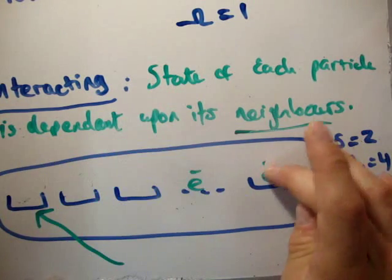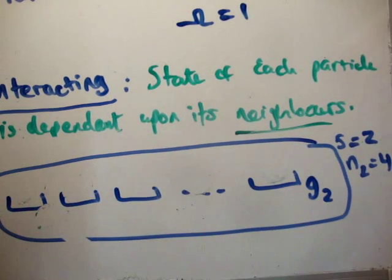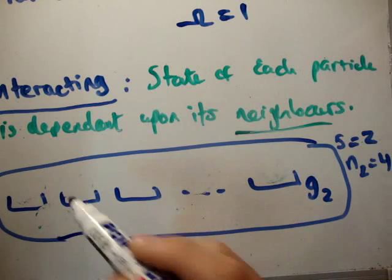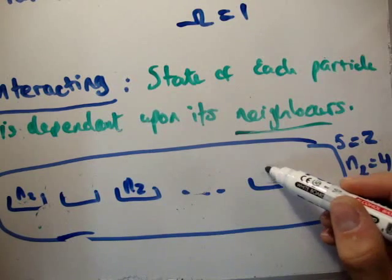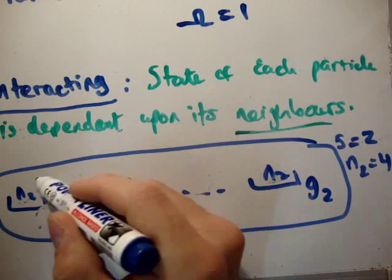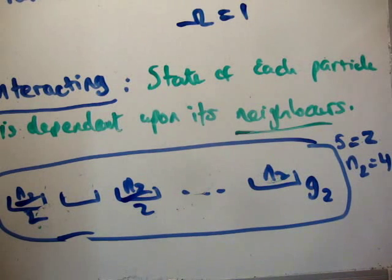Now, however, if they were non-interacting, so if each particle was operated independently of all the others, well, then you could put all the particles, you could put N sub 2 particles in there if you wanted. You could put all N sub 2 particles in here. All of them in there. Or you could split. This could be N sub 2 over 2. This could be also N sub 2 over 2.